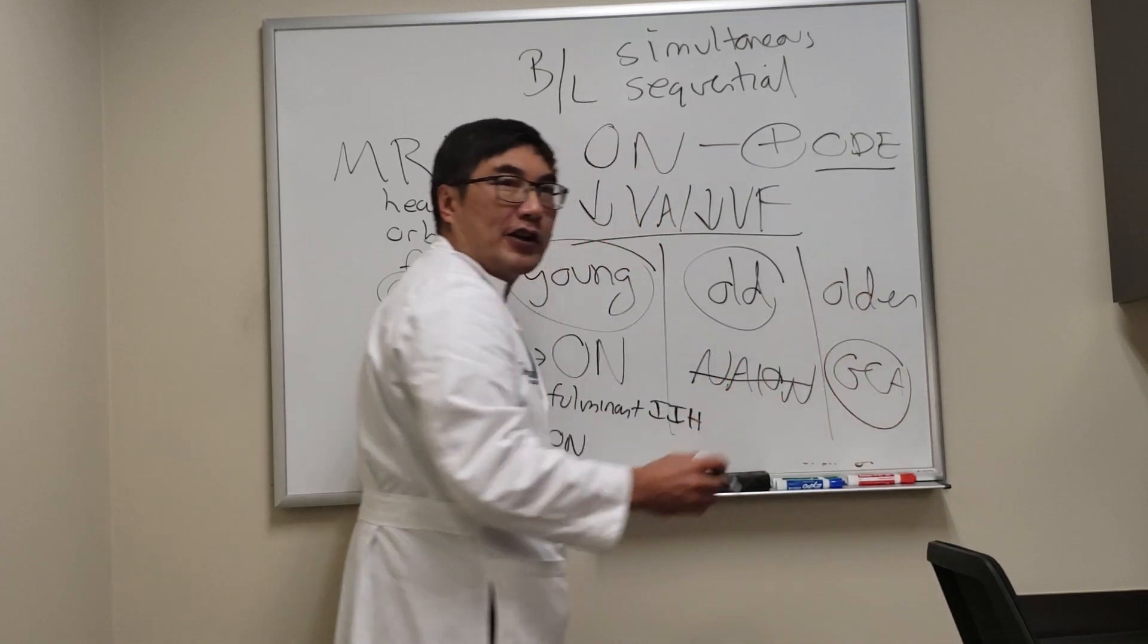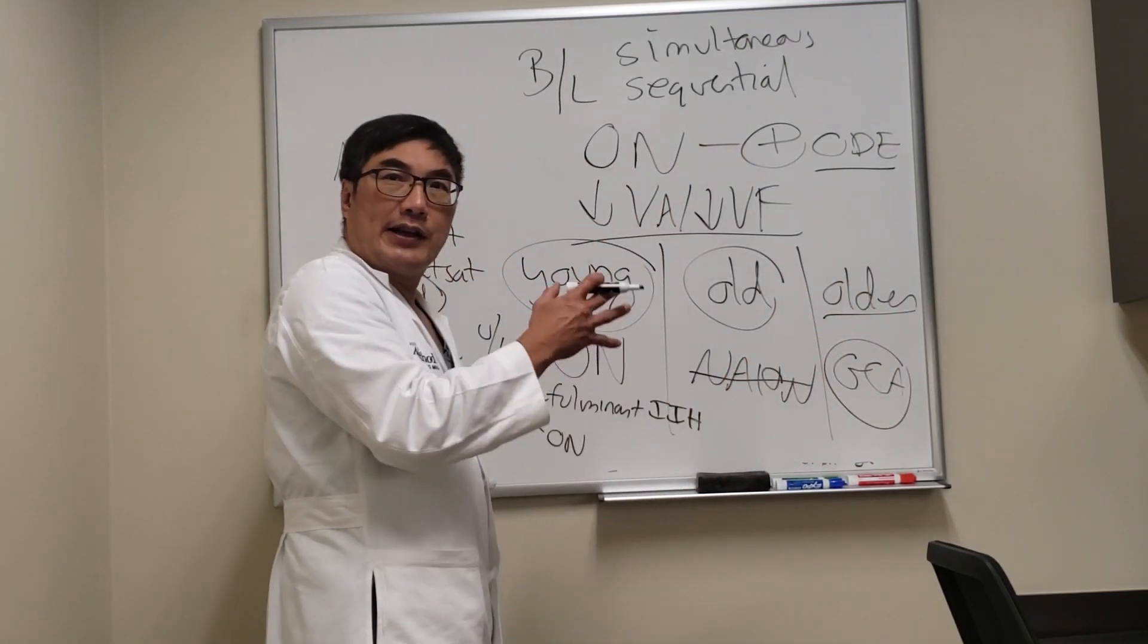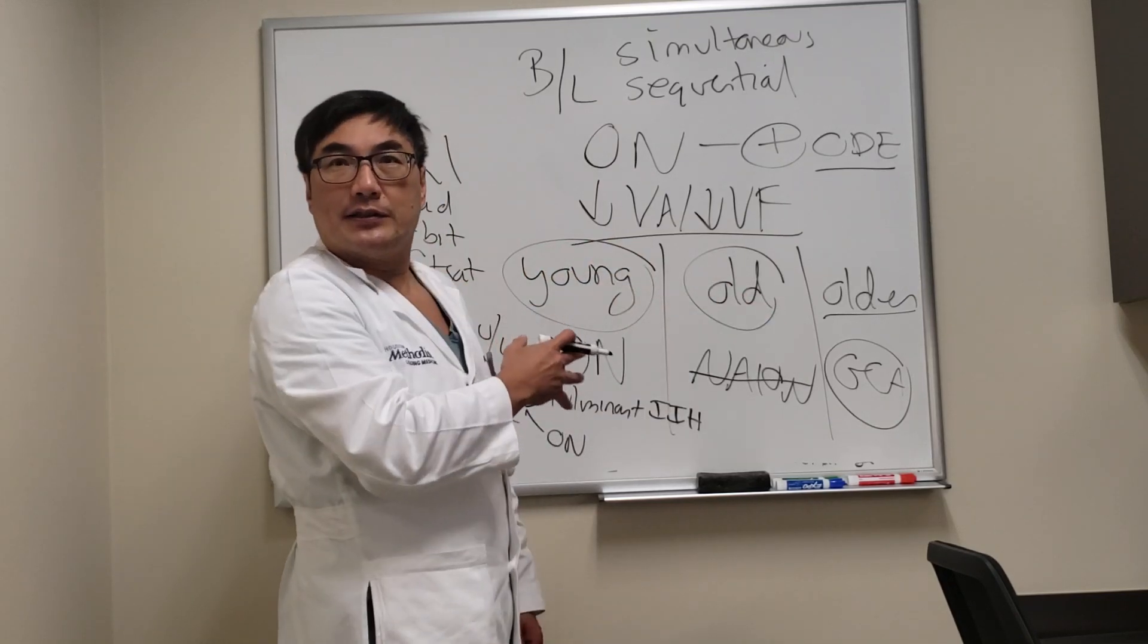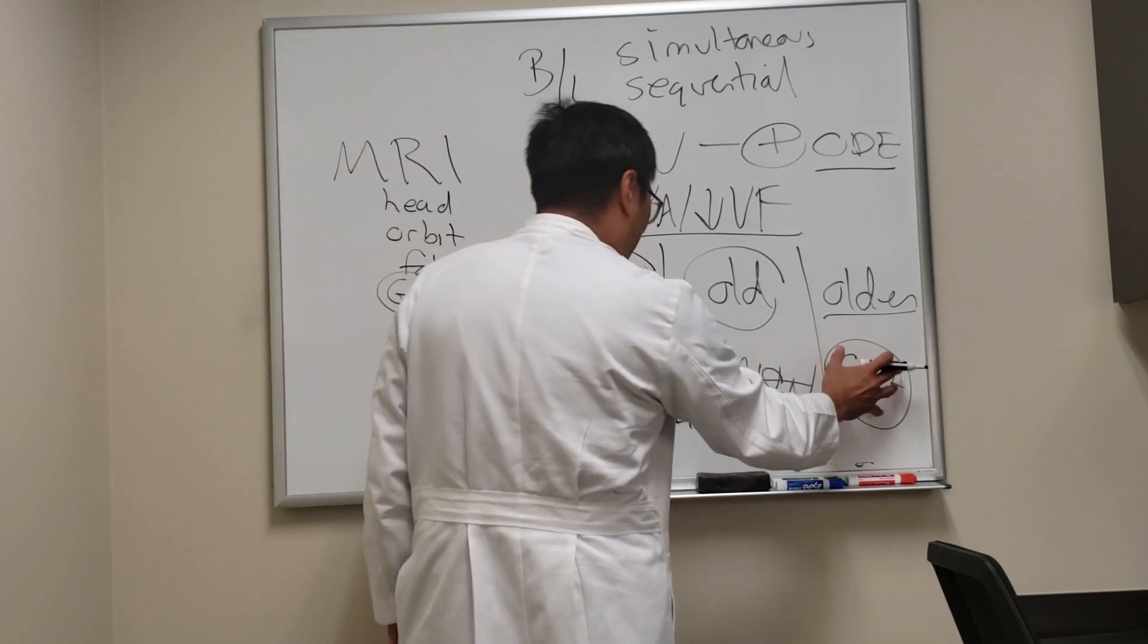Giant cell always in the differential even with enhancement. If they're an older patient we're still going to do the sed rate, the CRP. We're going to give all these people steroids and we're going to do a temporal biopsy on that one. Normally this one is not hard to differentiate.